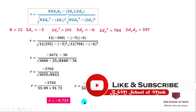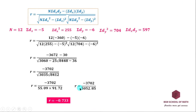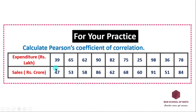This is the given question solved by the assumed mean method. This is also the actual mean method — solving both gives the same answer. The method may differ but the answer is the same — practice and solve it yourself. Thank you for watching, subscribe to my channel, see you in another video.